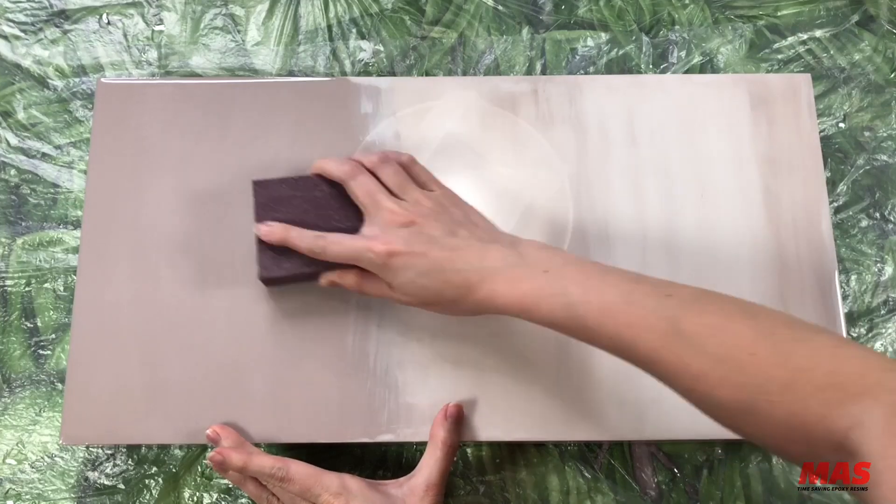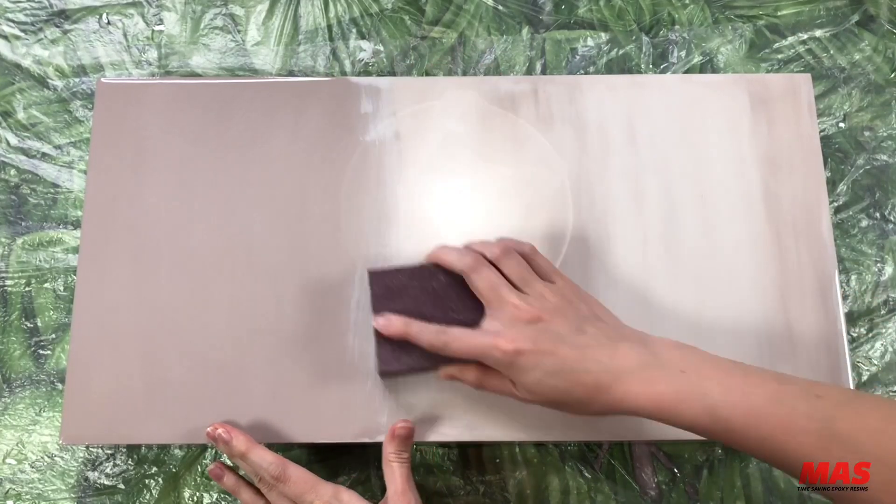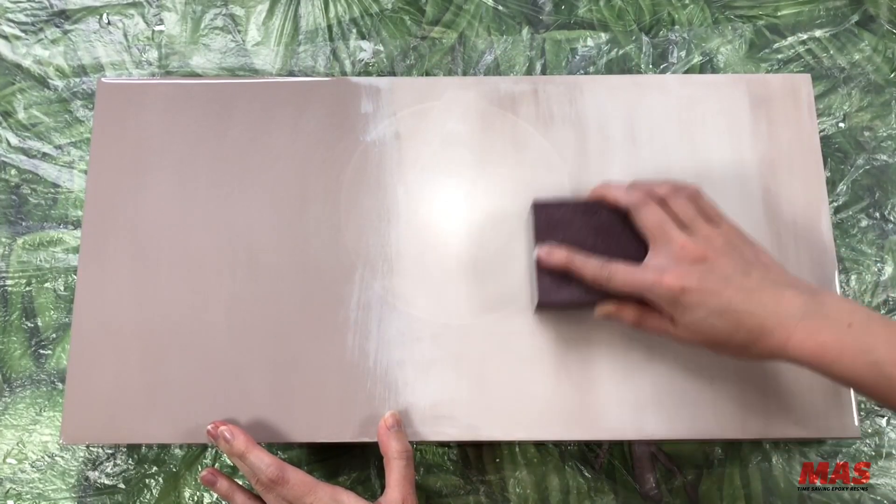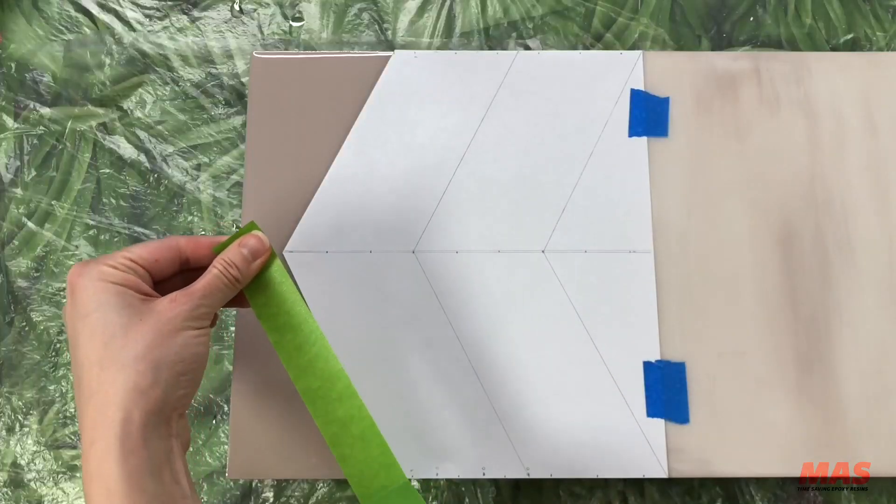For this I just used a 120 grit sponge sander and then cleaned the surface with rubbing alcohol and a soft cloth.